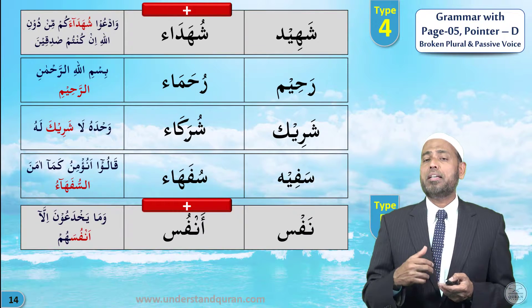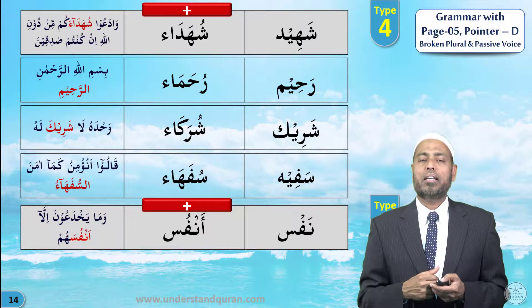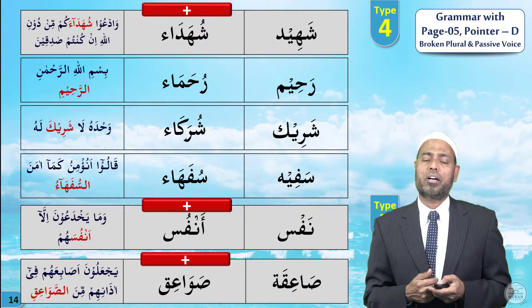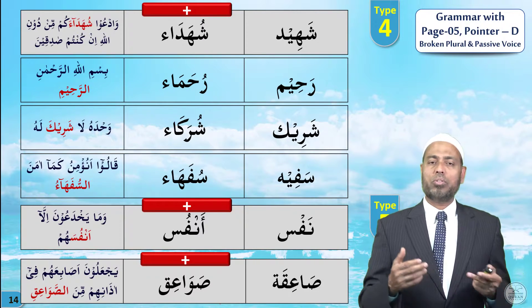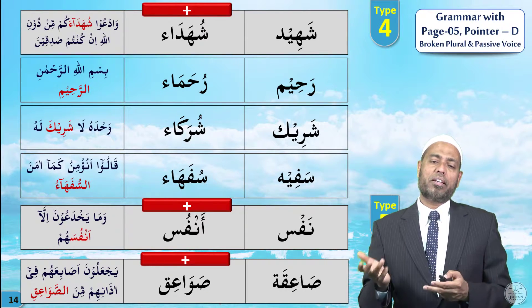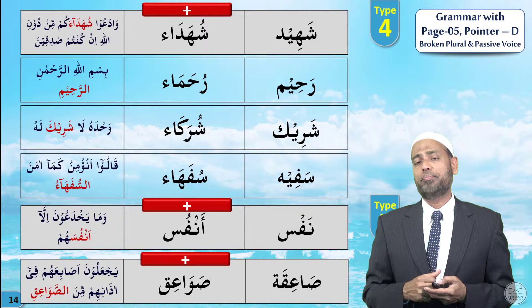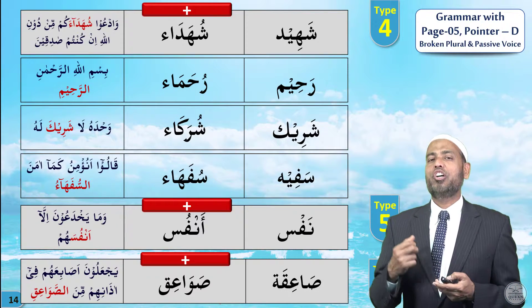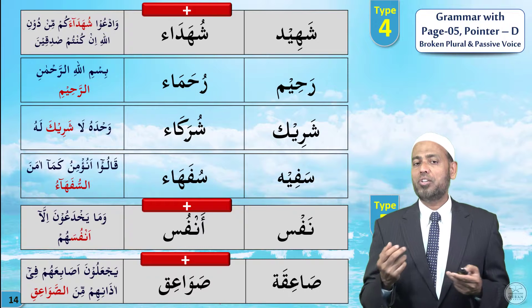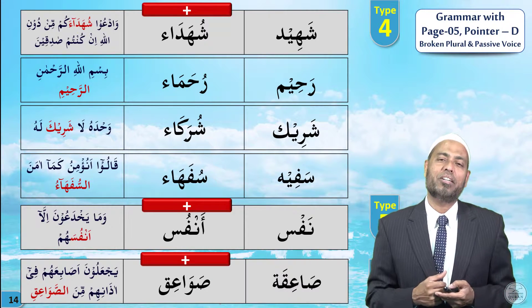The fifth type follows the pattern nafs — anfus. The plural of nafs is anfus — wa ma yakhda'una illa anfusahum, they do not deceive except themselves. The sixth type is sa'iqa; plural is sawa'iq — yaj'aluna asa'bi'ahum fi adhanihim minas-sawa'iq. Note: there are more words on these patterns, but we focus on those from the five pages studied.